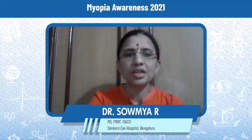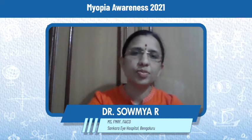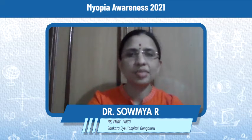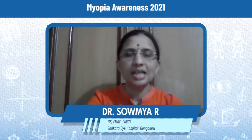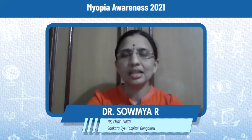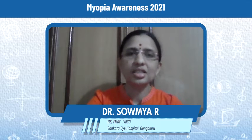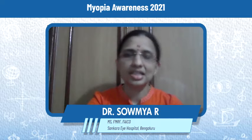Myopia is most commonly seen in childhood and keeps progressing till the teenage years, or sometimes to the age of 21 years. As the child grows, the eye also grows, and that is the essential reason why the numbers keep progressing, or the myopia keeps progressing in children.